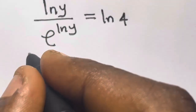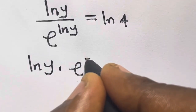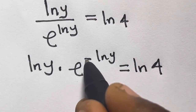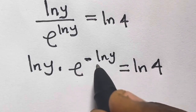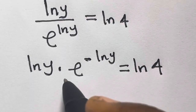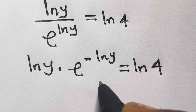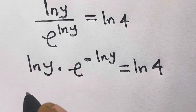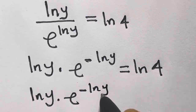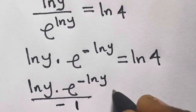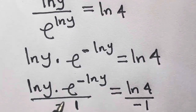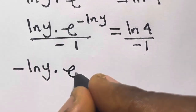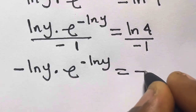So if we cross multiply, we are going to have ln(y) times e^(-ln y) equals ln(4). This is a negative index, and you simplify it. Now divide both sides by -1 so that the base and the power will be the same, to be able to apply the Lambert W function. So we have minus ln(y) times e^(-ln y) equals minus ln(4).